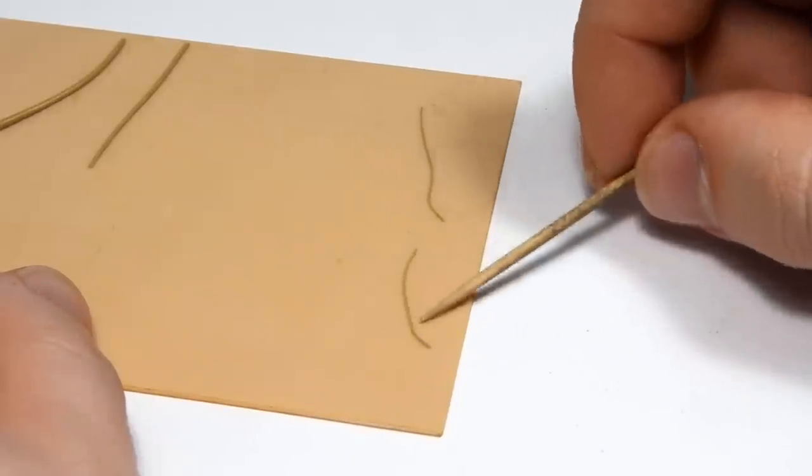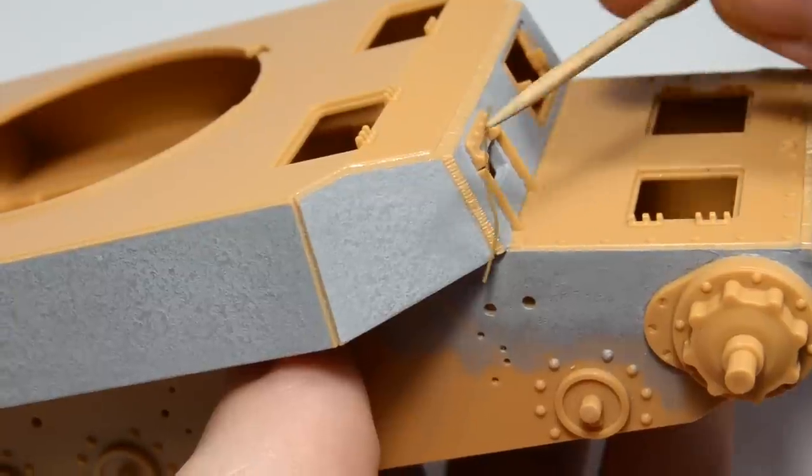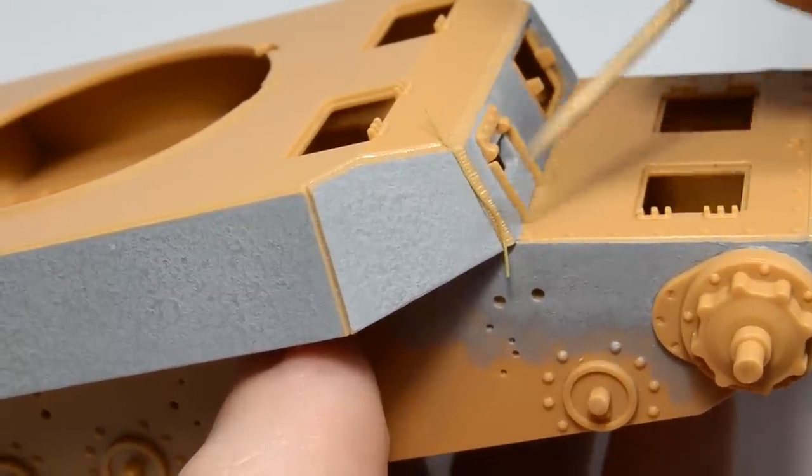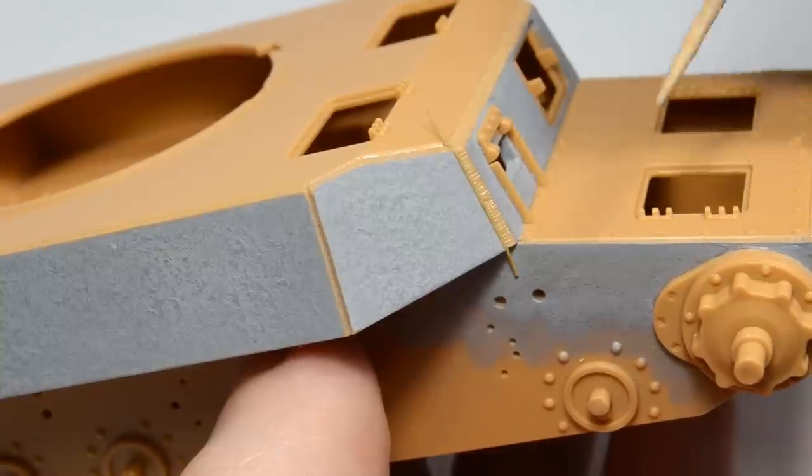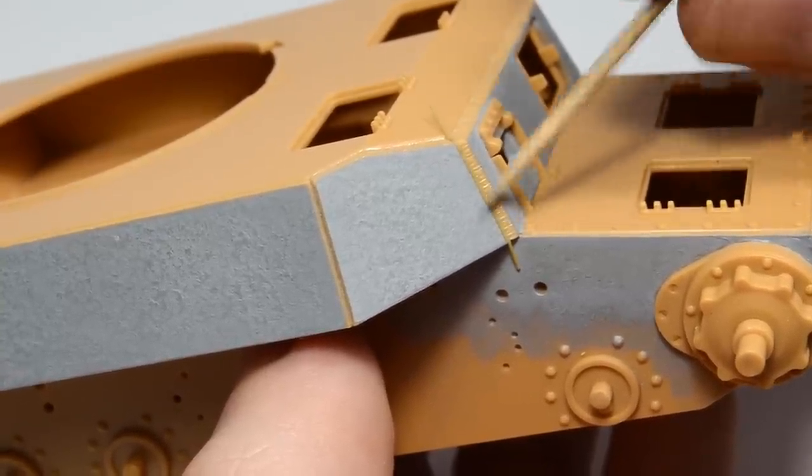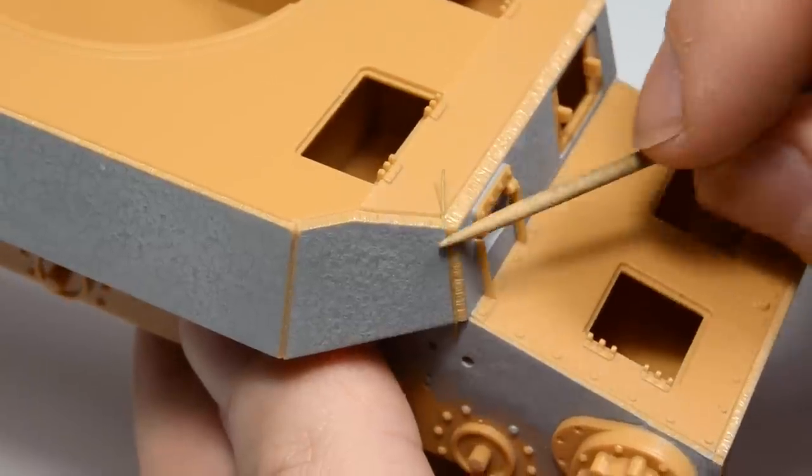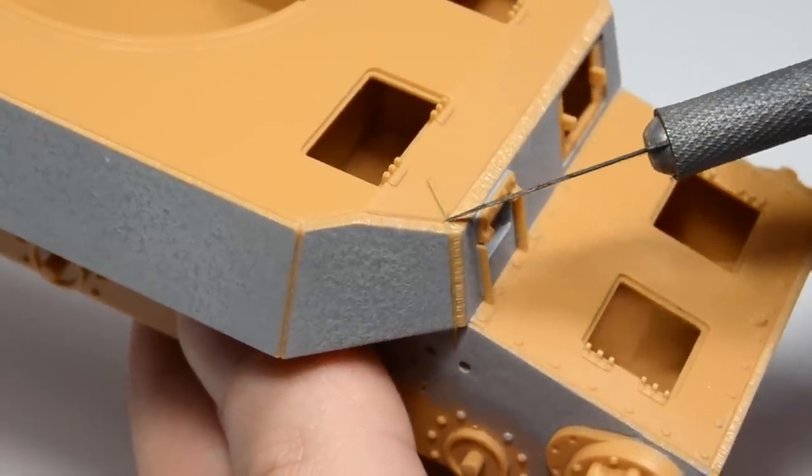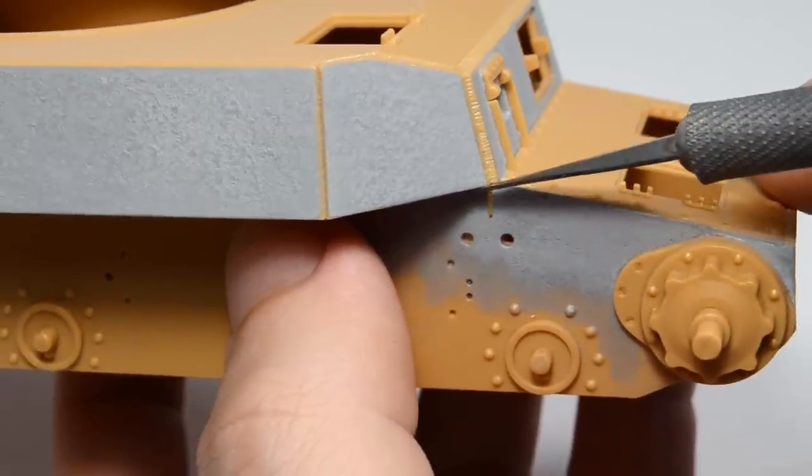When you have that desired thickness, pick up the noodle with a toothpick and carefully place it into the weld groove. Then push it until it lays flush with the surface. There are cases when welds are bulging out, but these are more common on Soviet vehicles. Most welds are quite subtle and in 35th scale they can just lay flat with the surface.